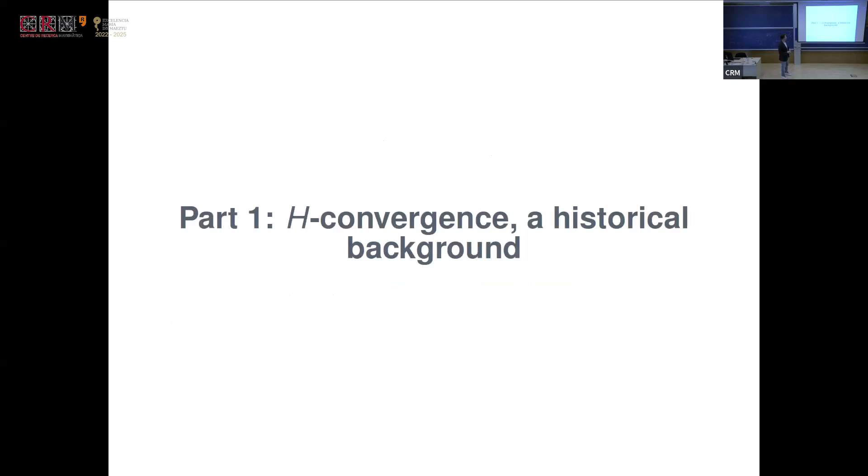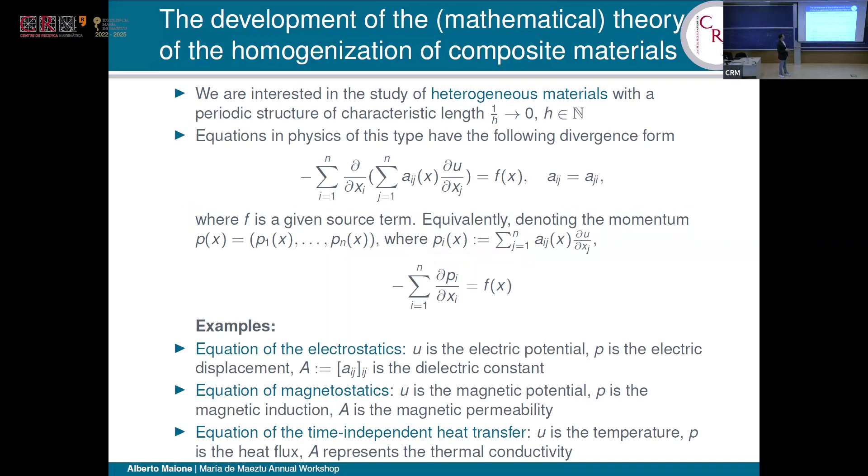The starting point—let's say we are in Paris, 1970, somehow the school of Jacques-Louis Lions. In particular, a mathematical physicist, I think is the correct pronunciation, who is named Sanchez Palencia. He is born in Madrid, but he is considered a French mathematician. I don't know why. And he is the really starting point of the story.